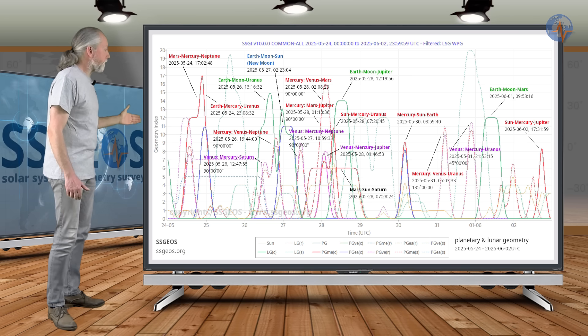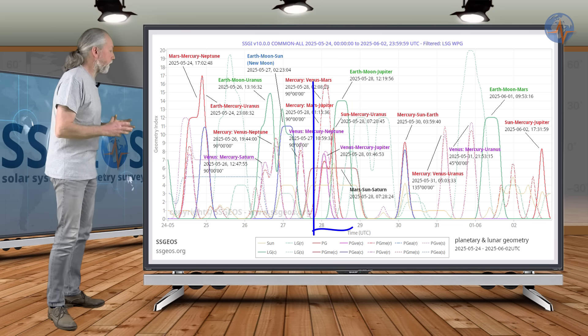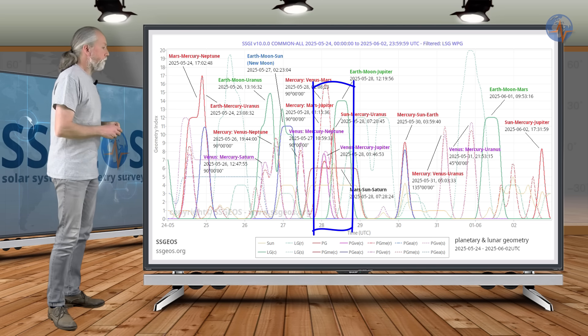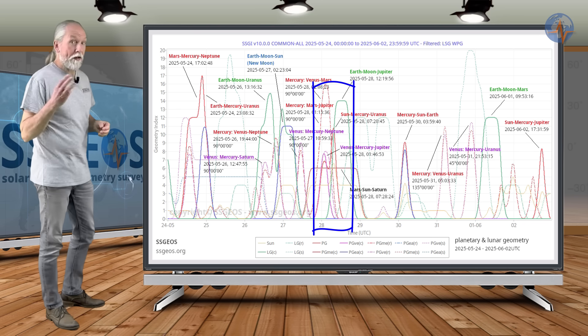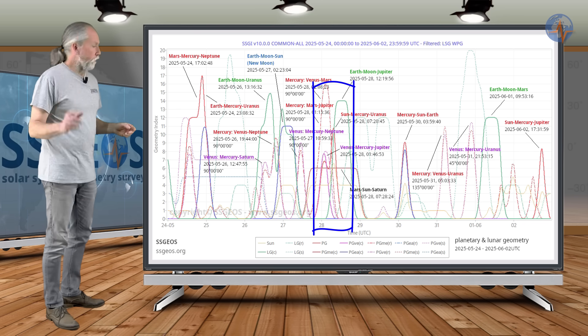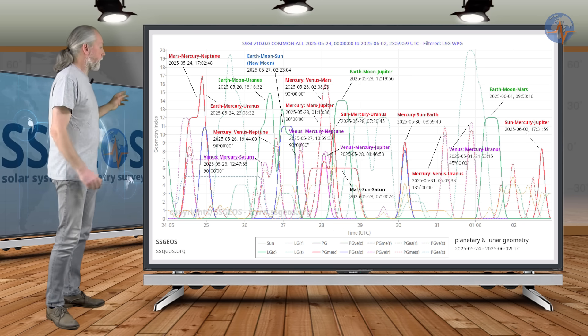And we have a planetary geometry converging there, especially on the 28th. Two planetary, three planetary conjunctions and a lunar conjunction. And that's probably the most critical geometry here.